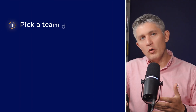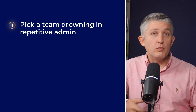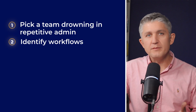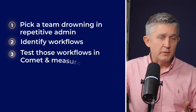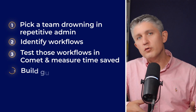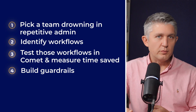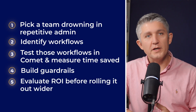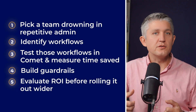So where should you start if you're considering Comet? Here's what I would do. Pick a team or member that are drowning in repetitive admin — sales or ops would work well. Identify two or three workflows like email follow-ups, procurement research, or competitor tracking. Test those workflows in Comet and measure the time saved. Build guardrails: define what data it can access and keep humans in the loop. Evaluate the ROI of using tools like Comet before rolling it out wider. That way you will see quick wins without exposing your business to unnecessary risk.